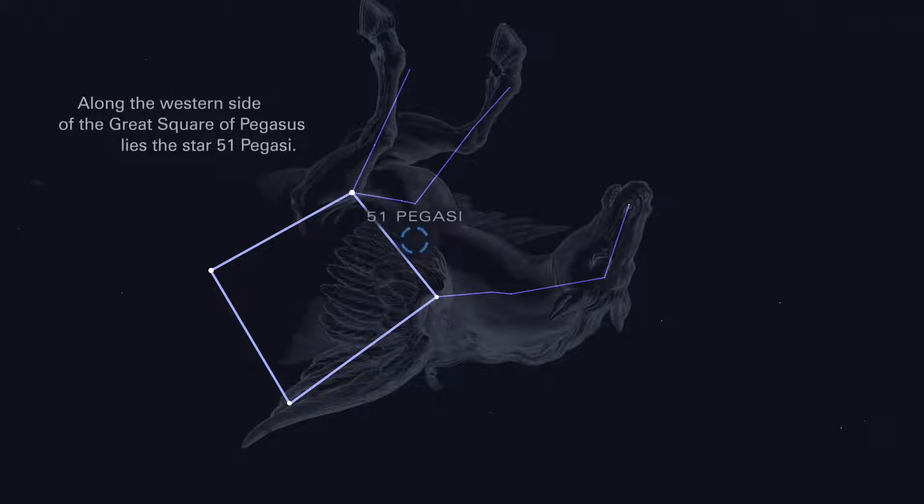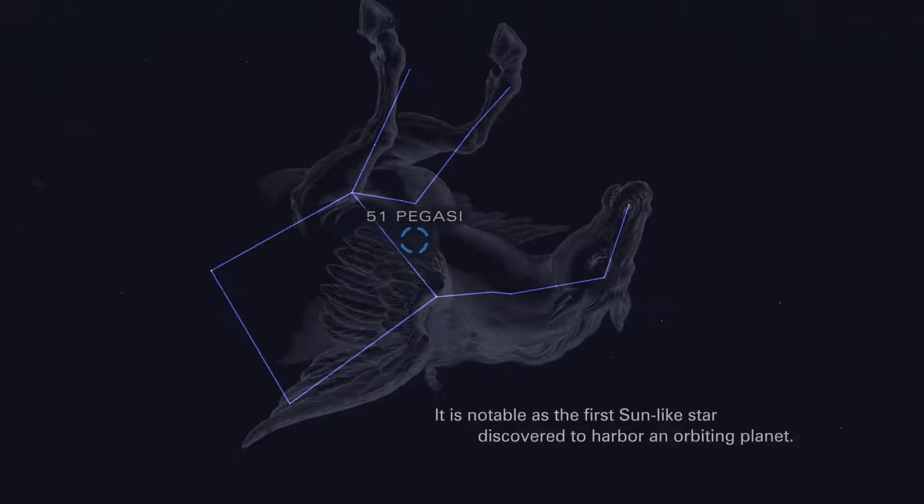Along the western side of the great square of Pegasus lies the star 51 Pegasi. It is notable as the first sun-like star discovered to harbor an orbiting planet.